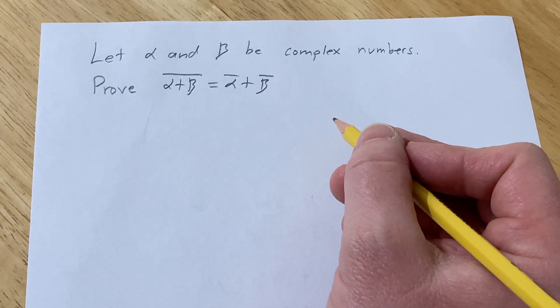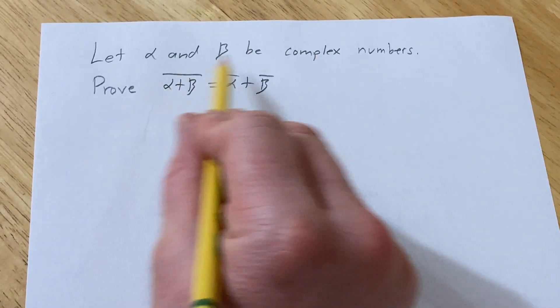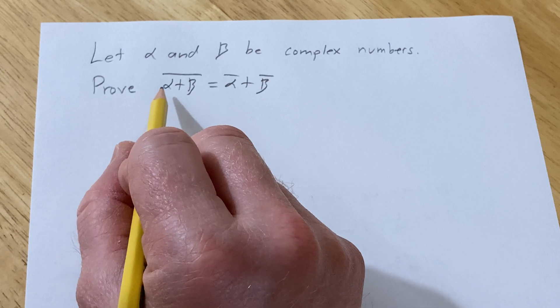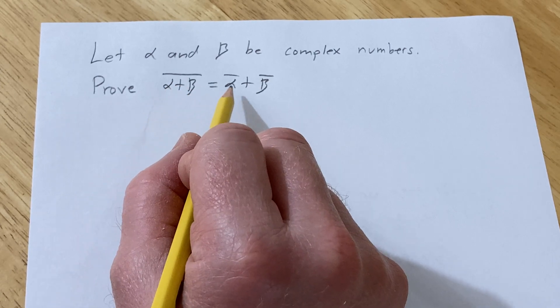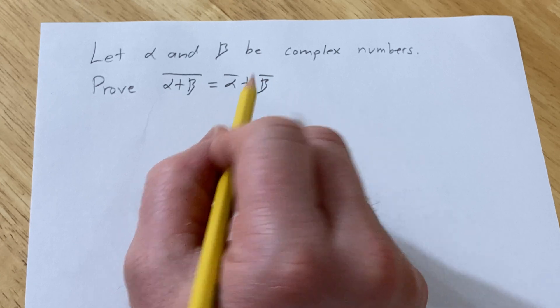Hello, in this problem we're going to do a proof. We have alpha and beta complex numbers, and we have to prove that the conjugate of alpha plus beta is equal to the conjugate of alpha plus the conjugate of beta.